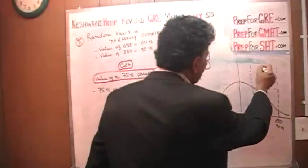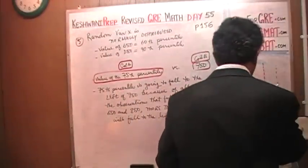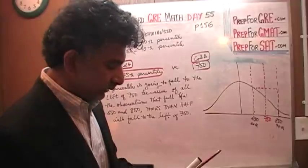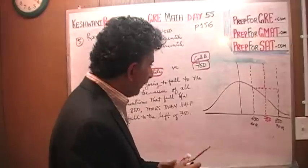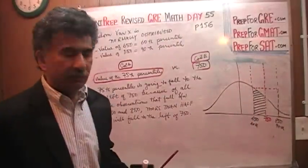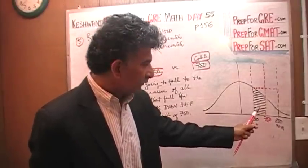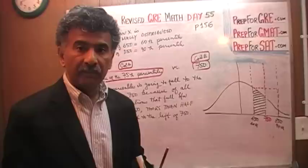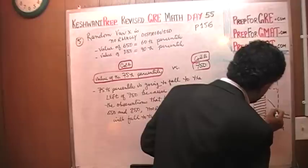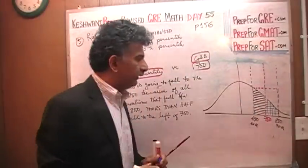As you can see, when we draw our 750 here, this is our 750, I meant to do it right in the middle. As you can clearly see, because of the fact that there is more area between 650 and 750, the area that lies under the curve between 650 and 750, that area is much larger than the area that lies between 750 and 850.